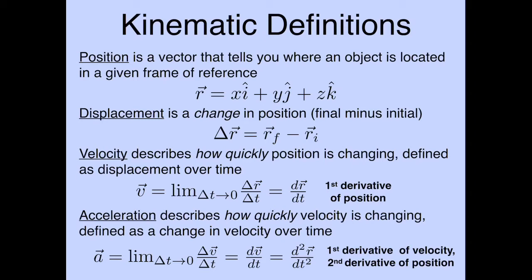Acceleration describes how quickly velocity changes over time. The average acceleration is Δv/Δt, and the instantaneous acceleration is dv/dt — the first derivative of velocity with respect to time. Since velocity is already the first derivative of position, acceleration is the second derivative of position with respect to time. So: take position, differentiate once to get velocity, differentiate again to get acceleration.